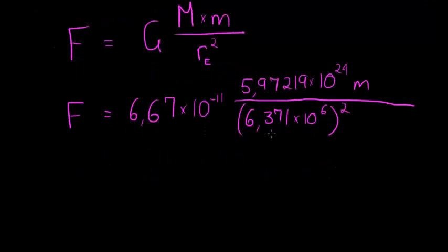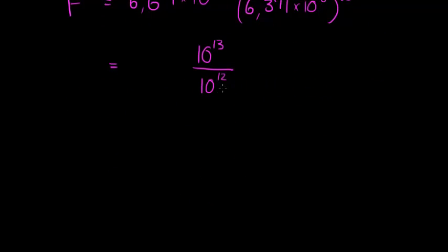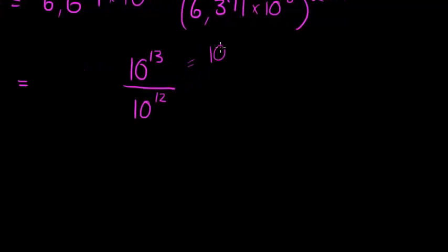Now to solve this, let's first simplify the 10 to the powers. So 10 to the power of negative 11, and we have 10 to the power of 24. These two are being multiplied, so that means we add the exponent. 24 minus 11 would be 13. So in the numerator, we have 10 to the power of 13. In the denominator, we have 10 to the power of 6, and it is being squared, so we have 10 to the power of 12. That means that this simplifies simply to 10.